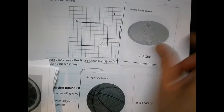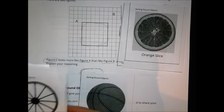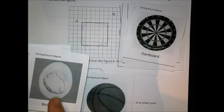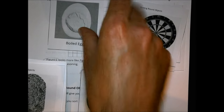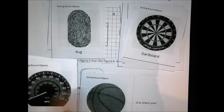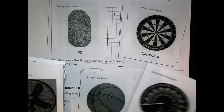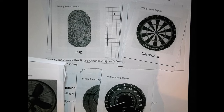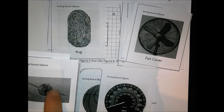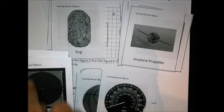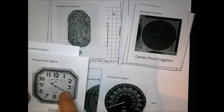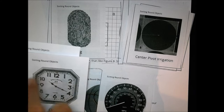A platter looks like a circle, an orange slice looks like a circle, a wagon wheel is pretty circular, a dartboard is a circle. A boiled egg — the inside part is a little more circular but the whole thing is a little ovalish. A rug is a little more like an oval. The speedometer — the top part is definitely like a circle but has a little chunk at the bottom. The fan cover is a little circular.